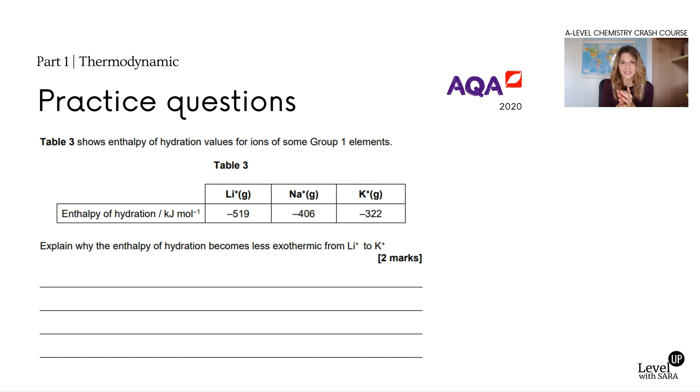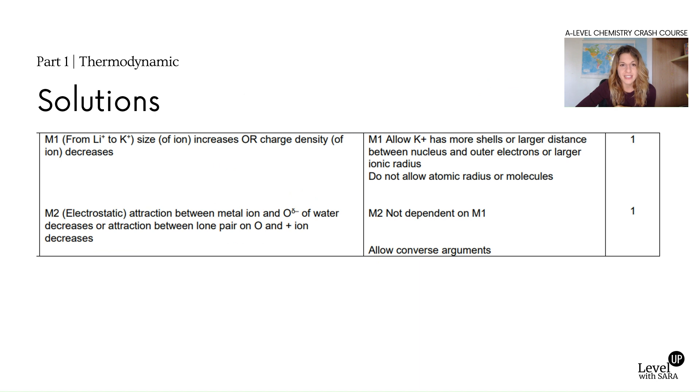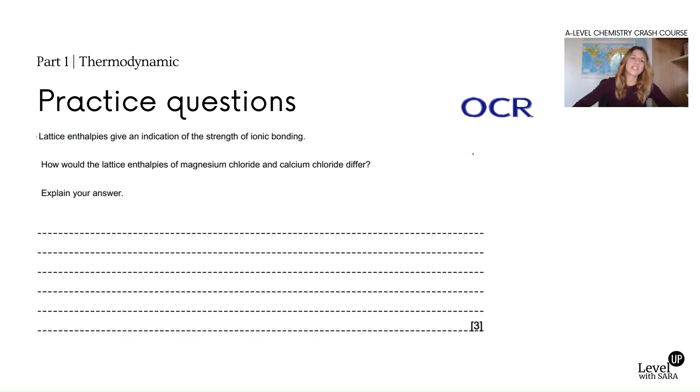Less exothermic simply means that there is less energy in it. It's exothermic because you're making bonds between the water and the ions. That's why it's an exothermic process. Here is the marking scheme for you to give it a read. Again, in terms of charge density and then the attraction between what. Those are the two things and those are the marks.